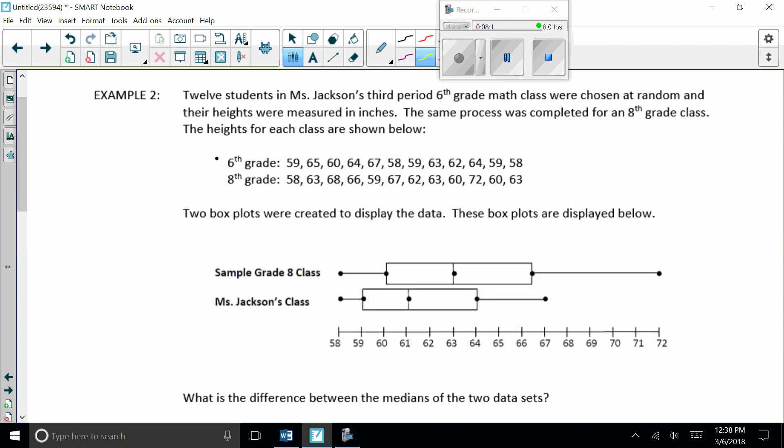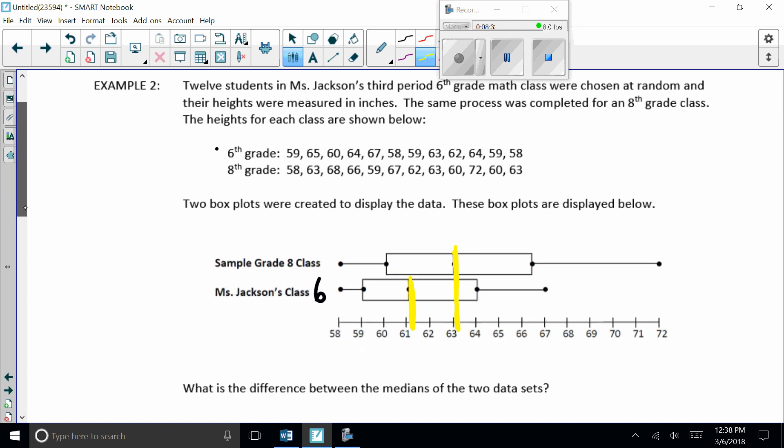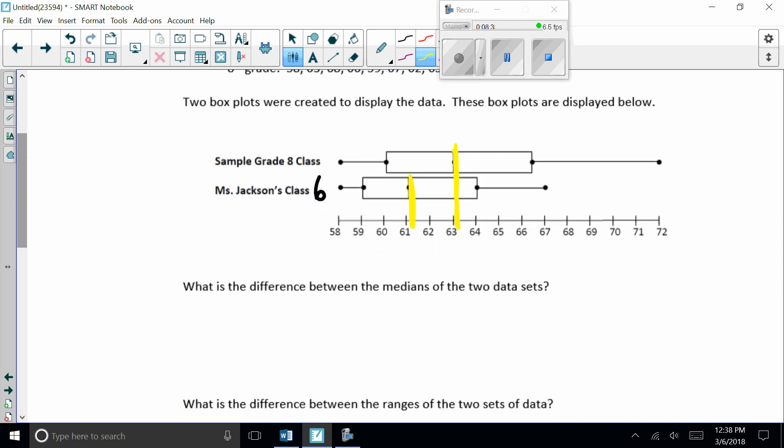So just by looking at the medians, we can look at the medians really easily, which is why I like box plots. We see our sixth graders are just above 61. And our eighth graders are just above 63 inches. So overall, they're about two inches taller. So what is the difference between the medians? Let's just say eighth grade about two inches taller.